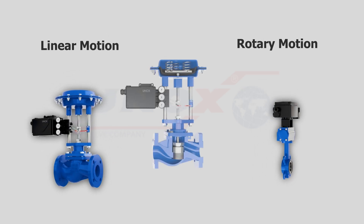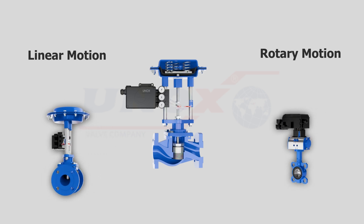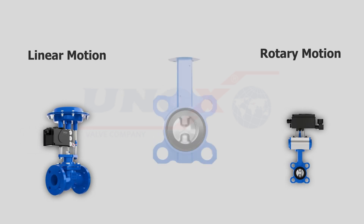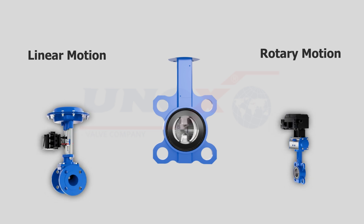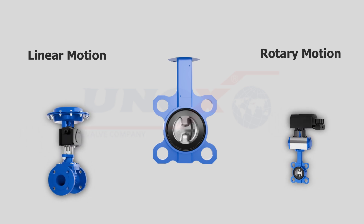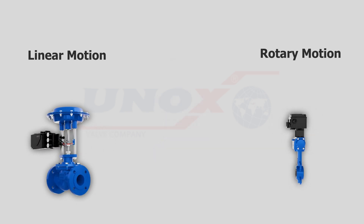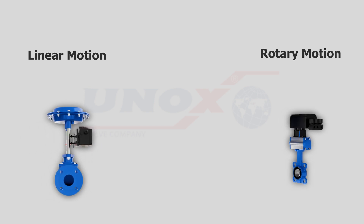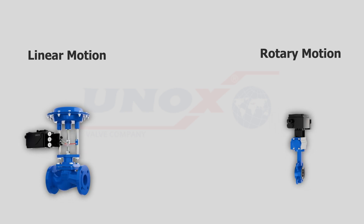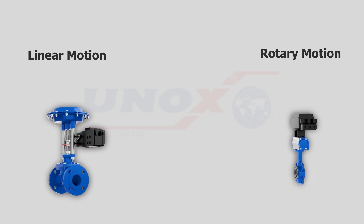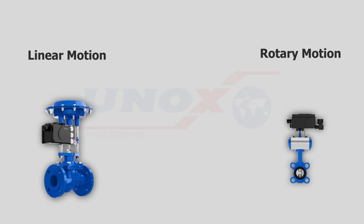In a linear motion valve, the stem and plug move up and down. The most commonly used type of linear motion control valve is the globe valve. A rotary motion valve generally turns 90 degrees to move from the open position to the closed position in most cases. A commonly used type of rotary motion valve is the butterfly or ball valve. An actuator is a power unit connected to the valve that provides the necessary force to open and close it. An actuator can be controlled electrically or pneumatically, and the most common and most reliable type is the pneumatic actuator.